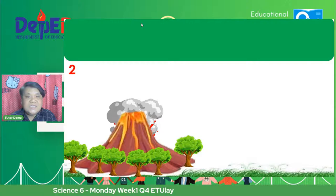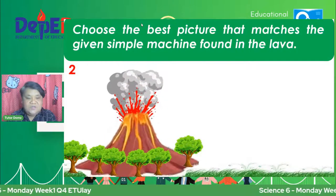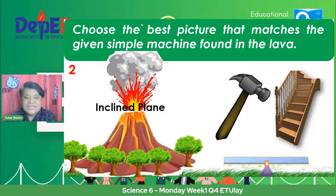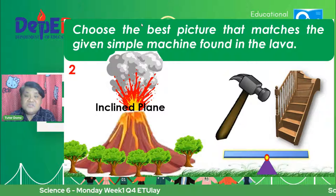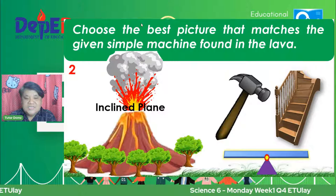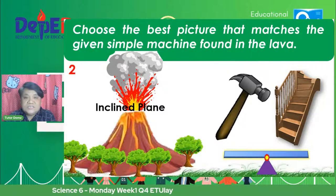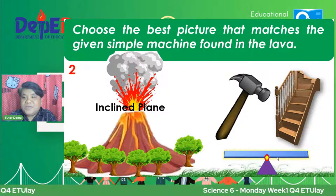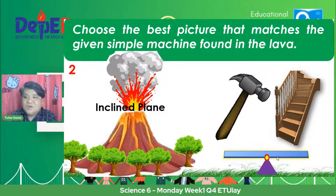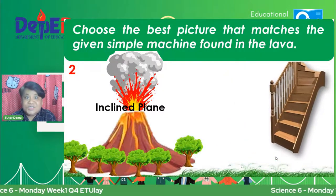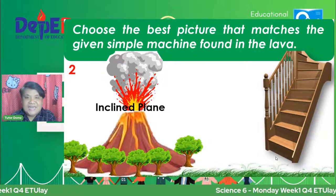Next, second activity. We have the inclined plane. Alin dito ang inclined plane? Is it the hammer, the stairs, or the scissor? Watching from Esperanza Elementary School, Kimby Pippe. So the answer for this activity is the stairs. That is the inclined plane.